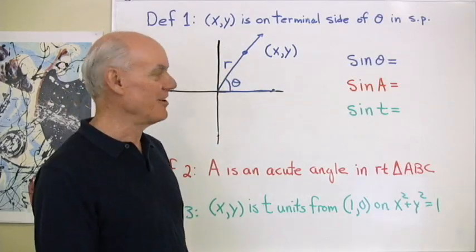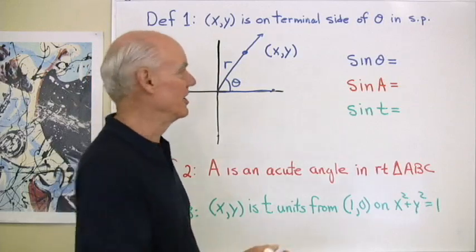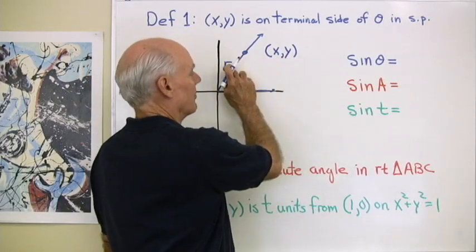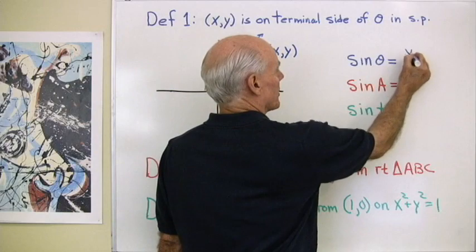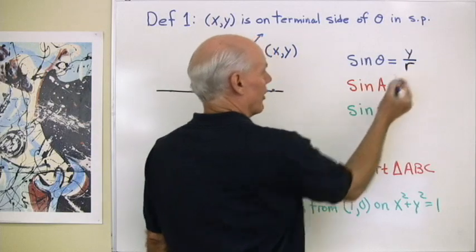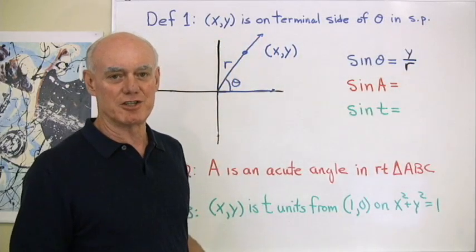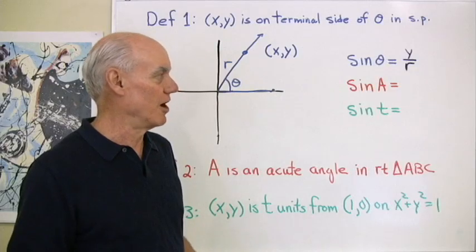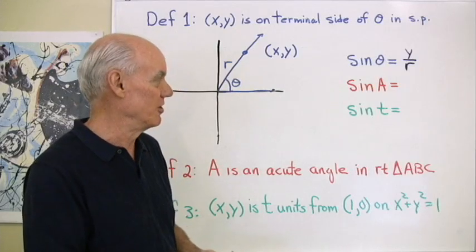So what's the sine of theta? Well, sine of theta by definition is the Y coordinate divided by the distance out to the point. So it's Y over R. So that's our number one definition if you're just starting out in the college trigonometry class. Usually this is the definition that you get.